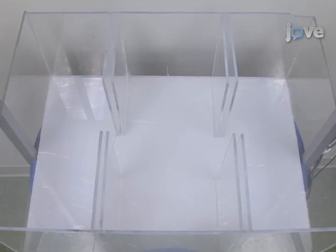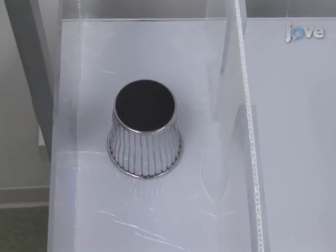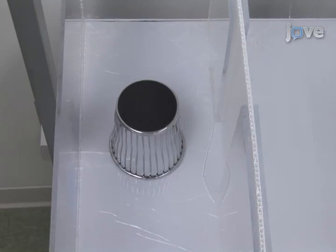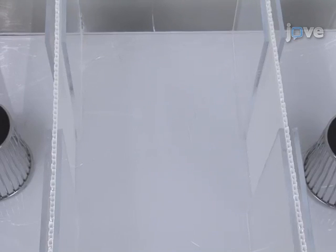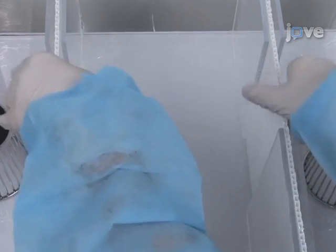Crawley's sociability and preference for social novelty test is conducted in a rectangular three-chamber box. Each chamber measures 19 by 45 centimeters and the dividing walls are made from clear plexiglass. The middle section opens to allow free access to each chamber.